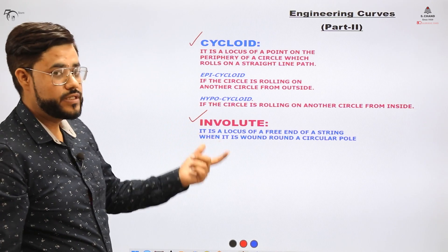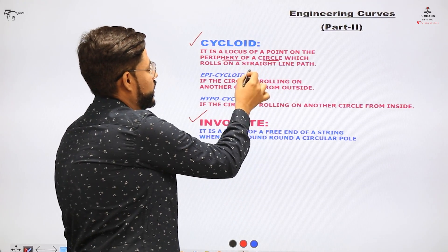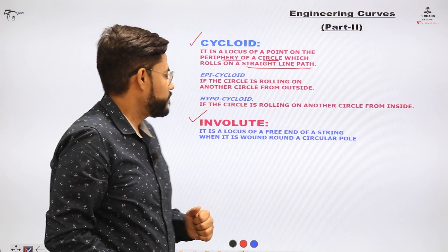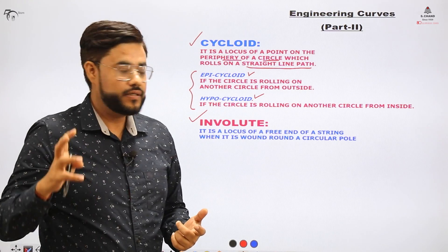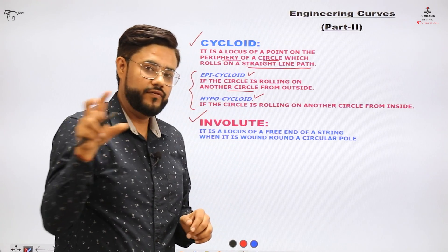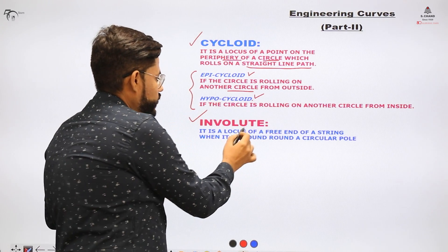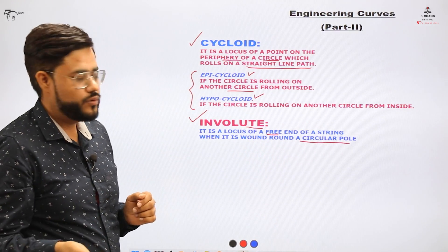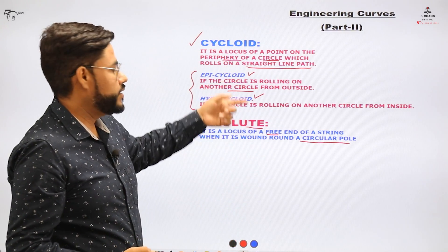A cycloid is the locus of a point on the periphery of a circle when the circle rolls on a straight path. There are two types of cycloids: epicycloid and hypocycloid. Epicycloid is when a circle rolls on the outside of another circle. If it rolls from inside, it is called hypocycloid. Involute is the locus of all the points on a string wound around a circular pole. These are all defined as the locus of points related to some circle.